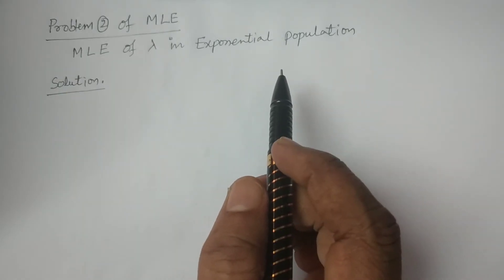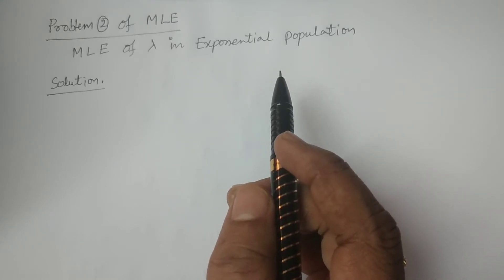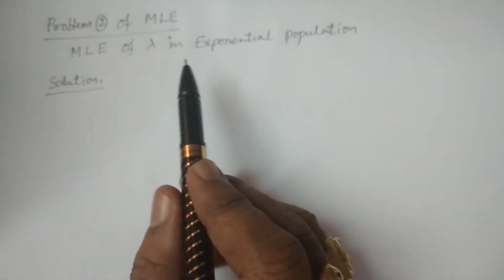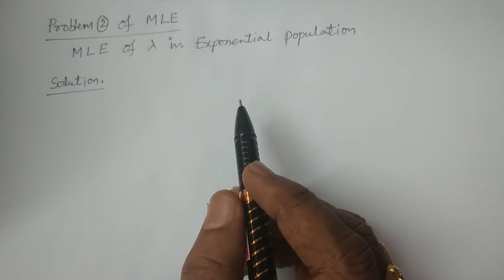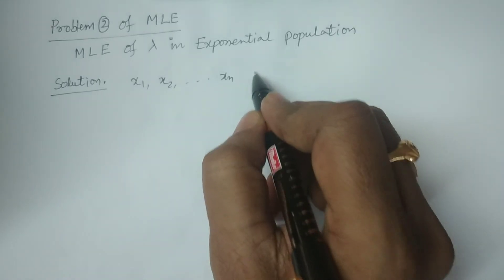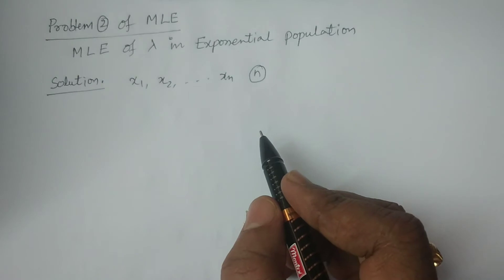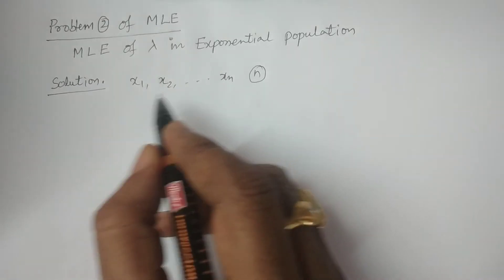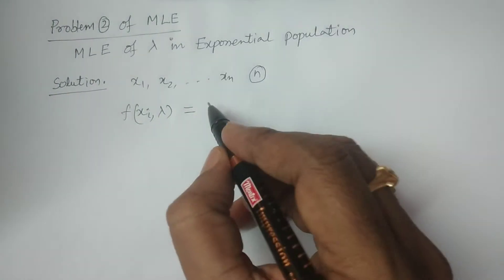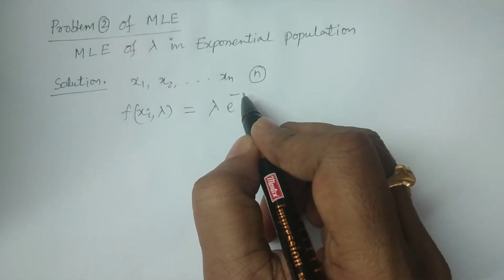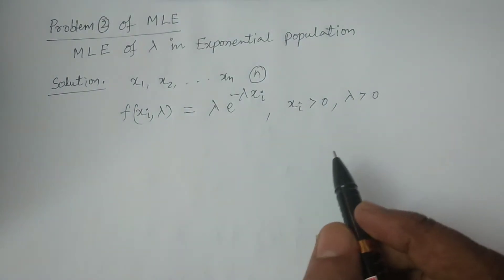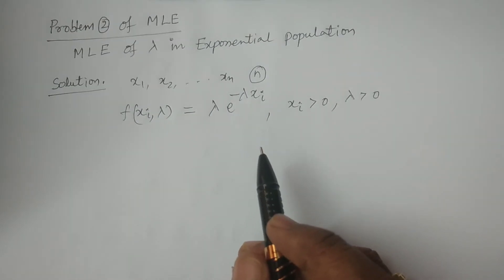If we consider a random sample from the exponential population, what would be the estimator for the population parameter lambda by the method of MLE? We consider x1, x2, ..., xn as a random sample of size n drawn from an exponential population whose density function is f(xi, lambda) = lambda · e^(minus lambda · x), where xi > 0 and lambda > 0. Here lambda is the parameter of the exponential distribution.